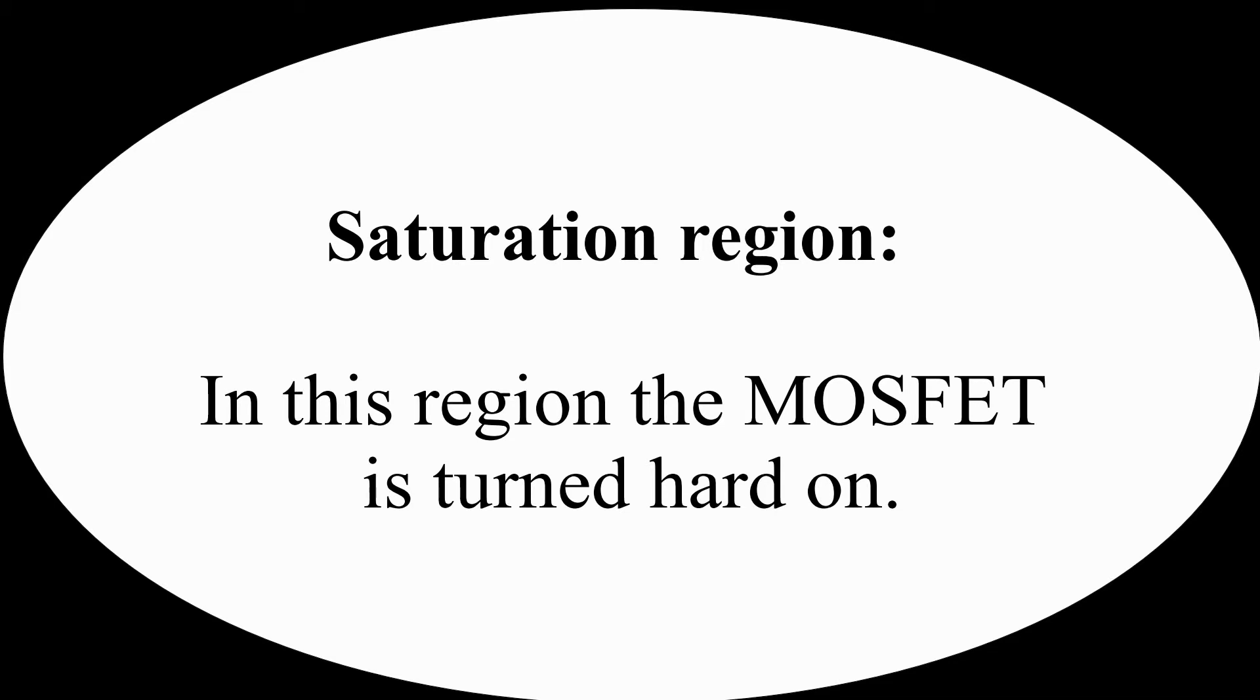Saturation region: In this region, the MOSFET is turned hard on. The voltage drop for the MOSFET is typically lower than that of the bipolar transistor. As a result, power MOSFETs are widely used for switching large currents.